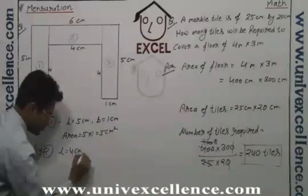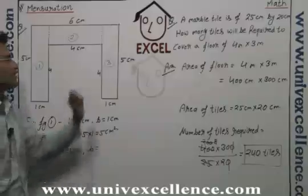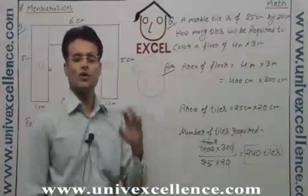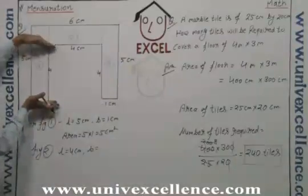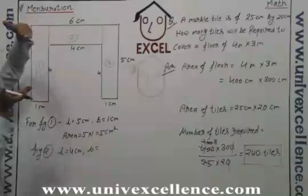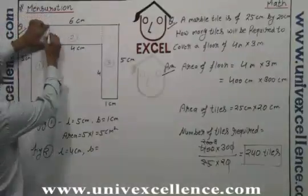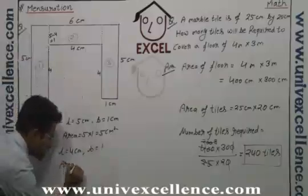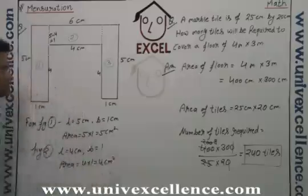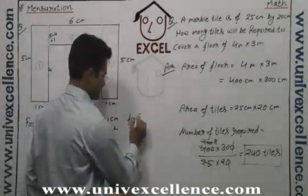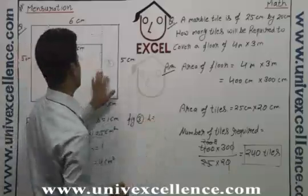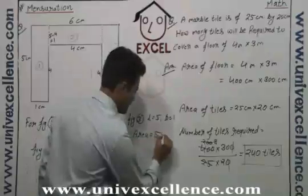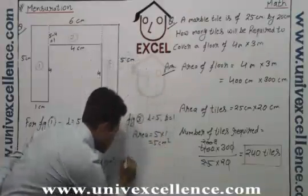For figure two, the length is 4 centimeters. We do not have the breadth directly, but we can find it: this part is 4 and the complete part is 5, so this missing part is 5 − 4 = 1. So breadth equals 1, and area is 4 × 1 = 4 centimeter square. For figure three, it is the same as figure one — length is 5, breadth is 1 — so area is 5 × 1 = 5 centimeter square.